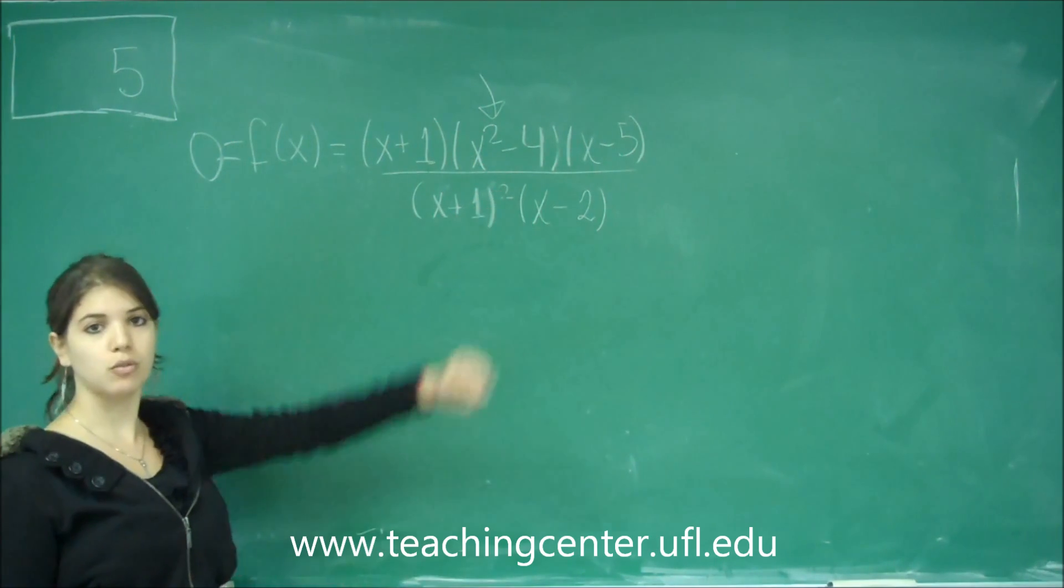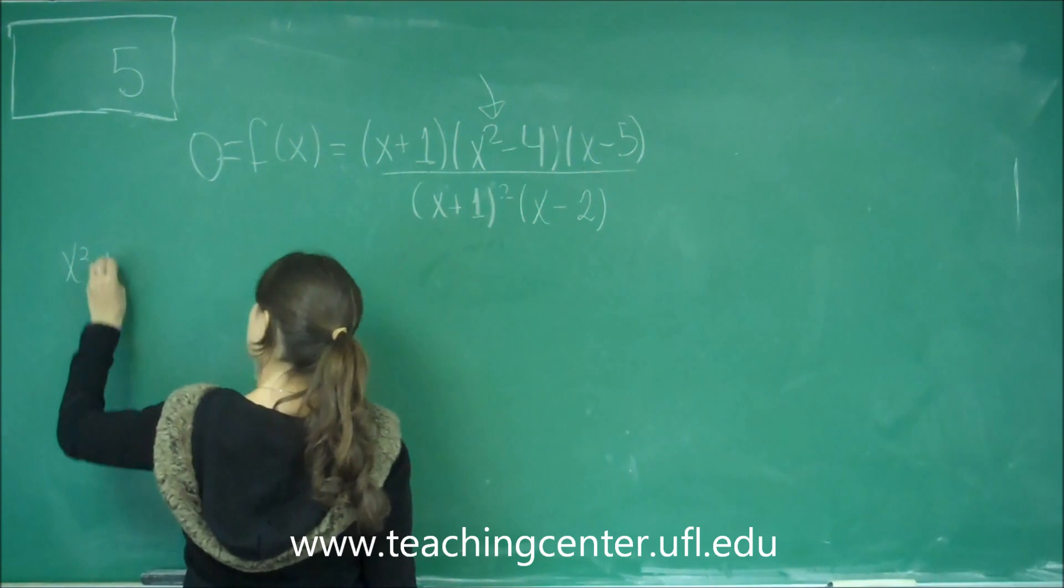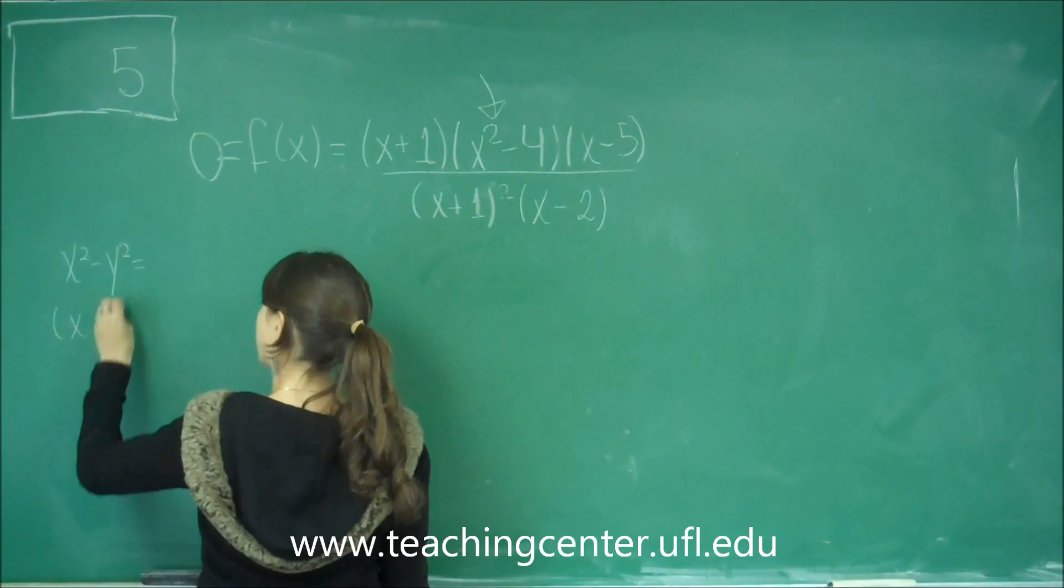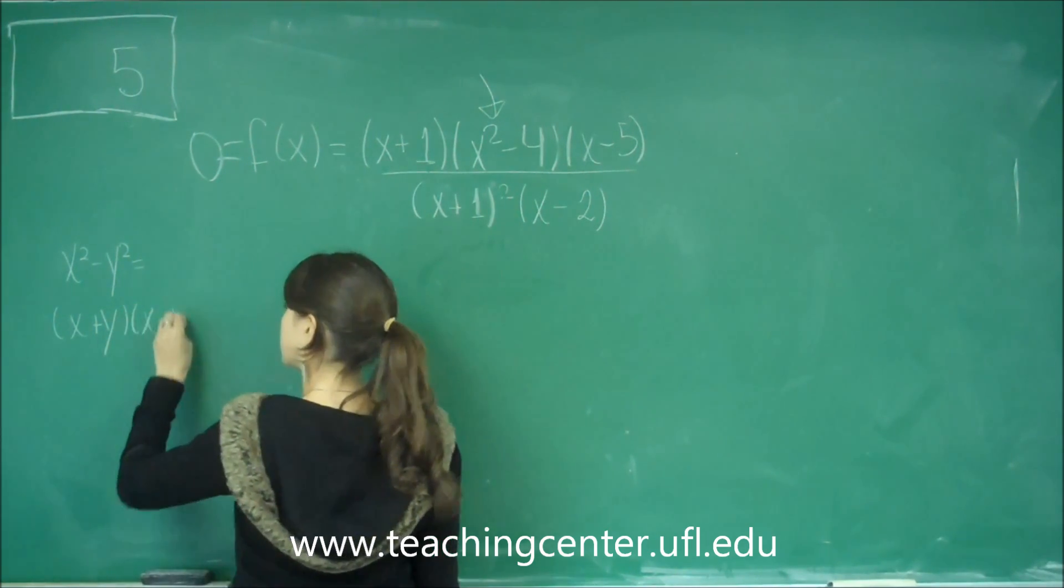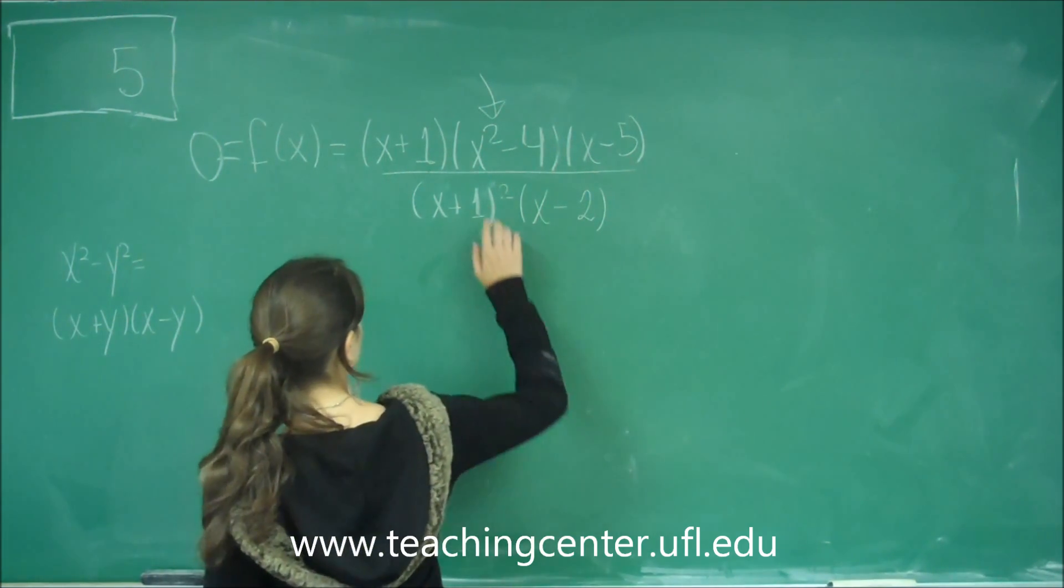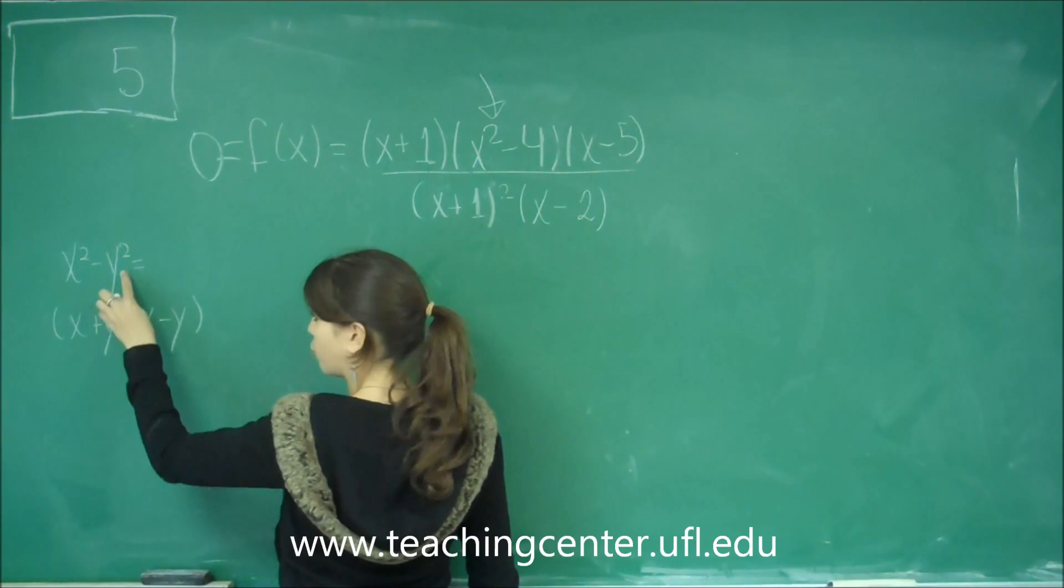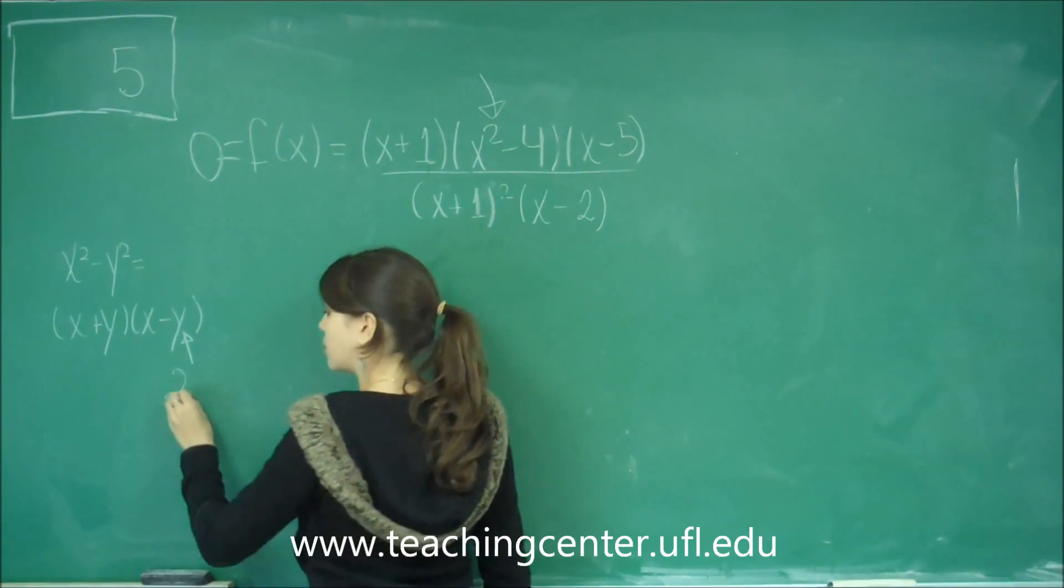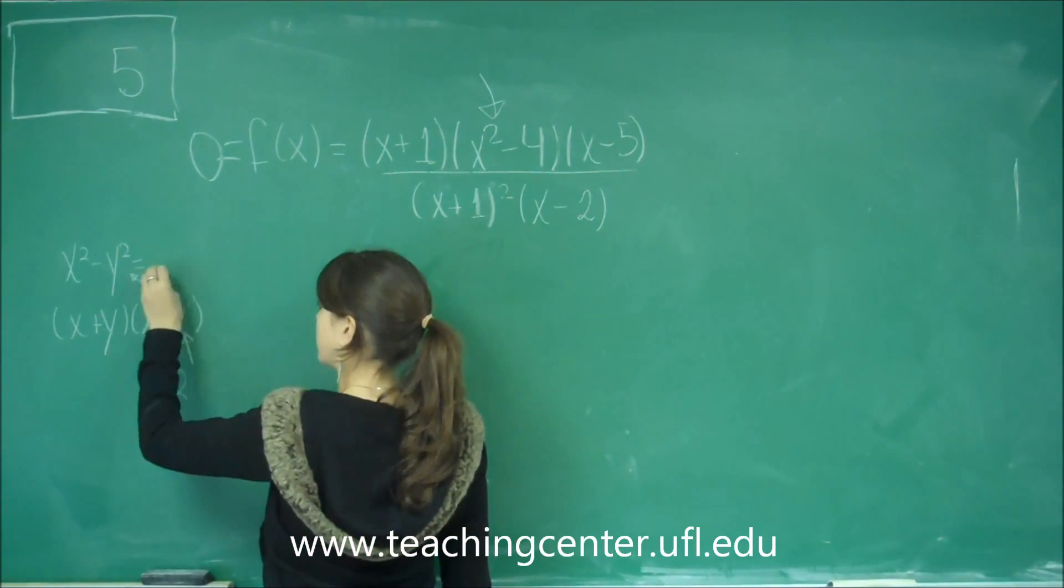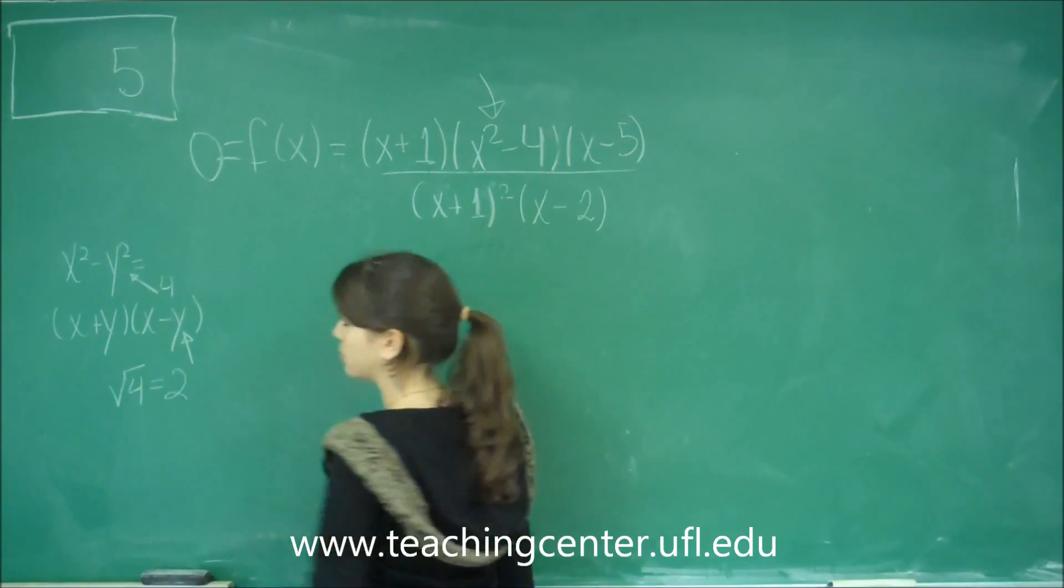For x squared minus 4, that's a difference of squares, and that's of the type x squared minus y squared equals x plus y times x minus y. In this case, x is x, and y squared is 4. That means that y has got to be the square root of 4, or 2, because this is 4, so this has to be the square root of 4.